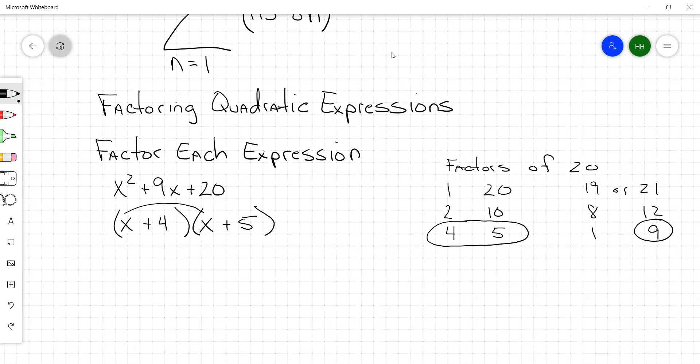So if you took x times x, you would get x squared. And then x times 5 would be positive 5x. 4 times x would be positive 4x. And 4 times 5 would be positive 20. And then if you combine your like terms here in the middle, you get x squared plus 9x plus 20. And if it matches this, then your factors are correct.